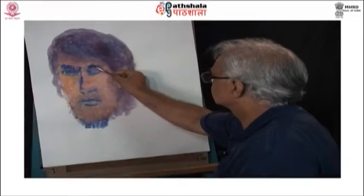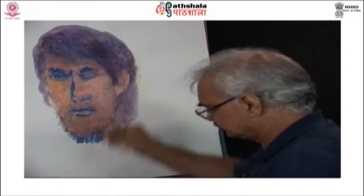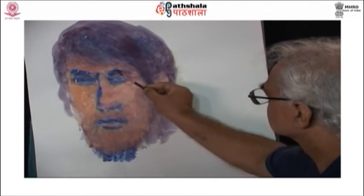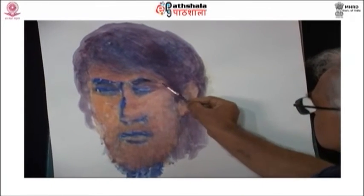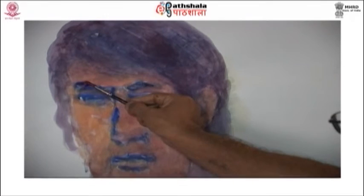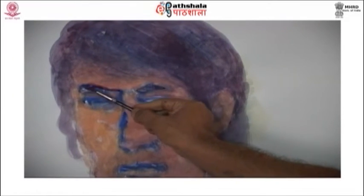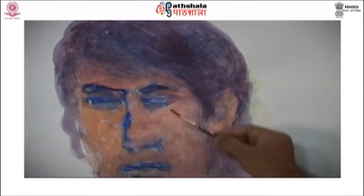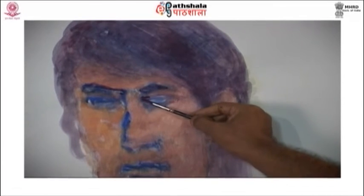Allow the yellow layers to dry. I will then use a dark shade to shape the facial features. Pick the same ultramarine blue and crimson we used for glazing and make dark strokes for the eyes.